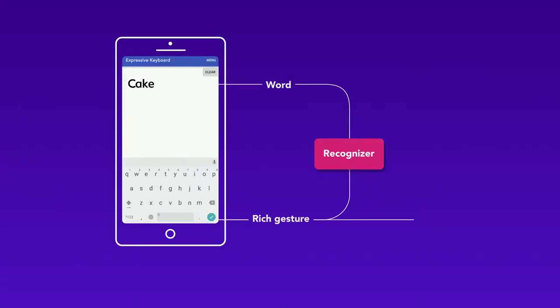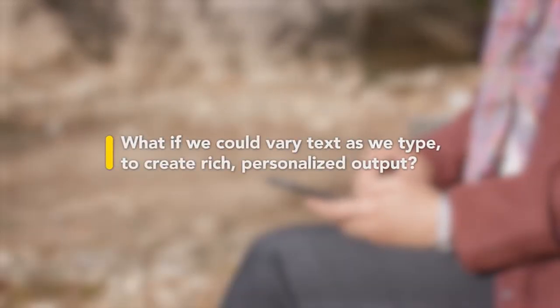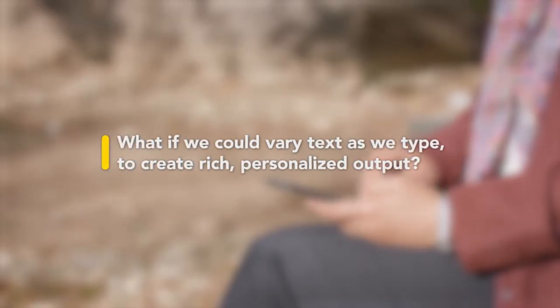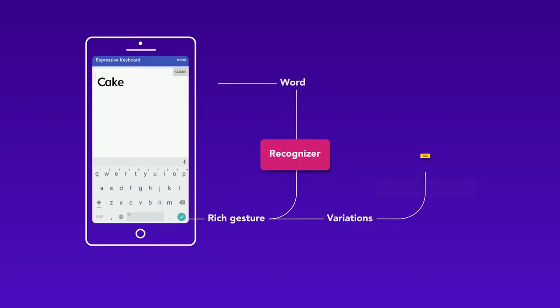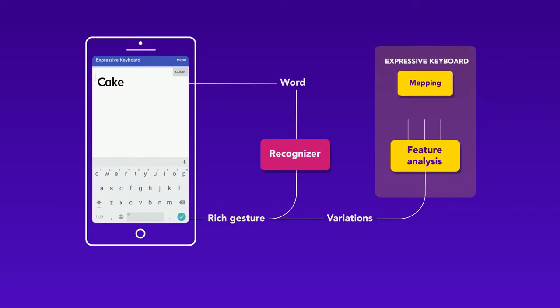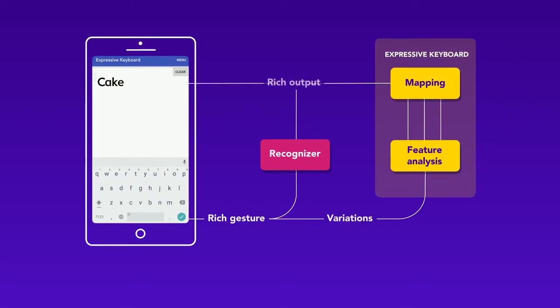But the system throws away these variations. What if we could vary text as we type to create rich, personalized output? Expressive keyboard keeps the correct word, but also recycles the variation in each gesture to create rich output.